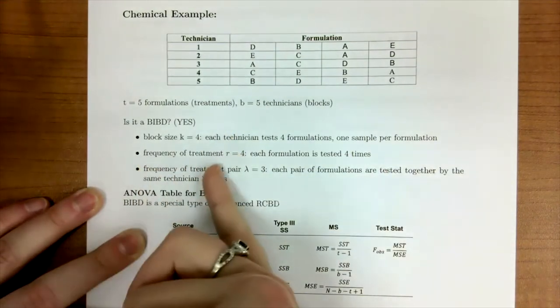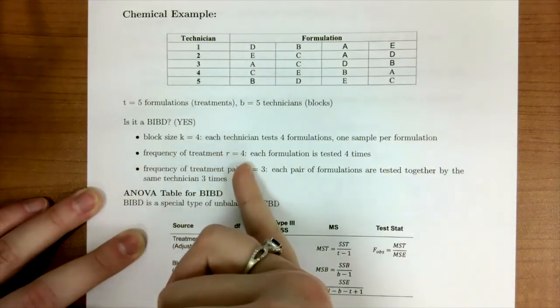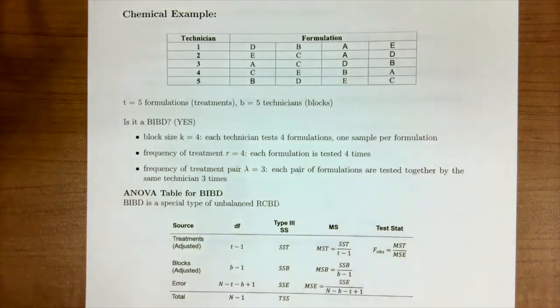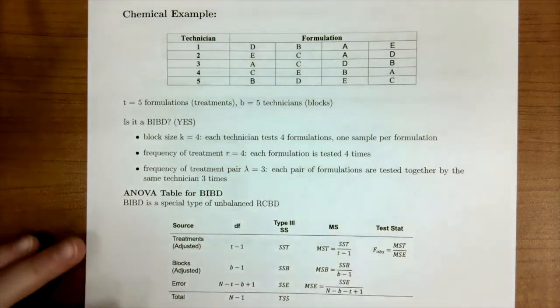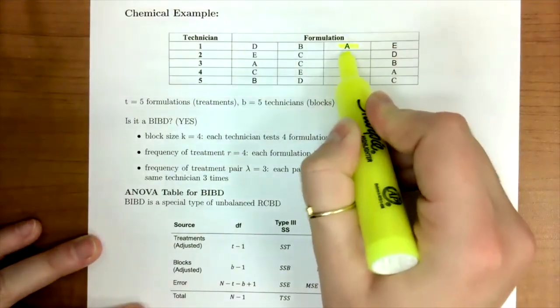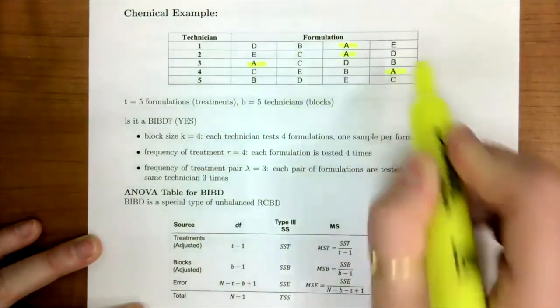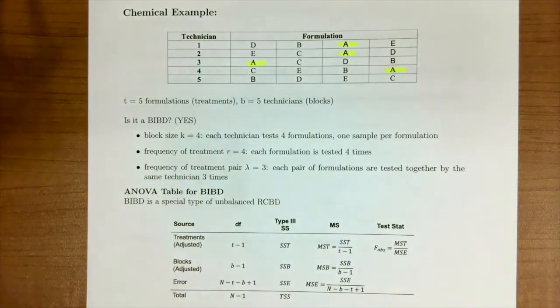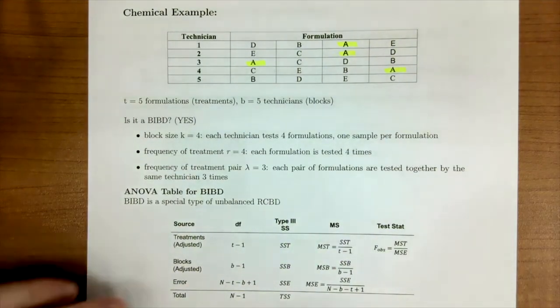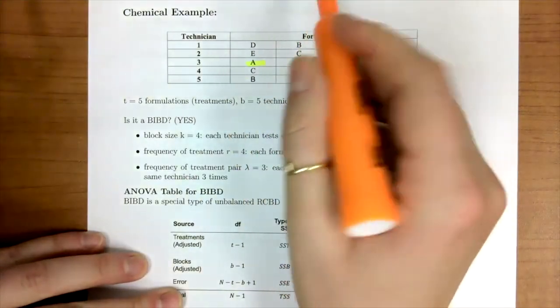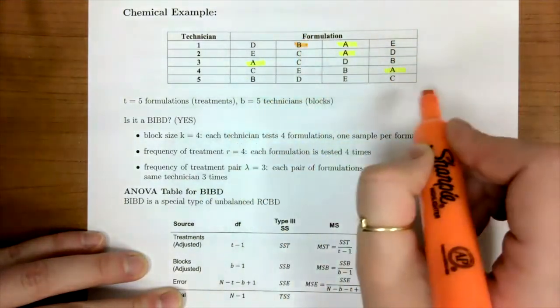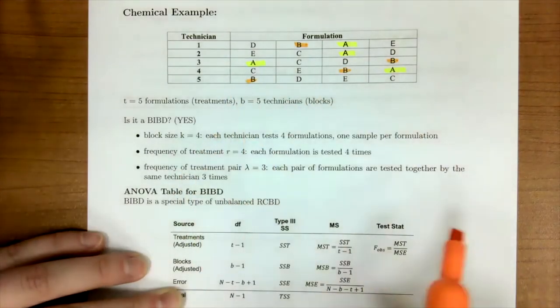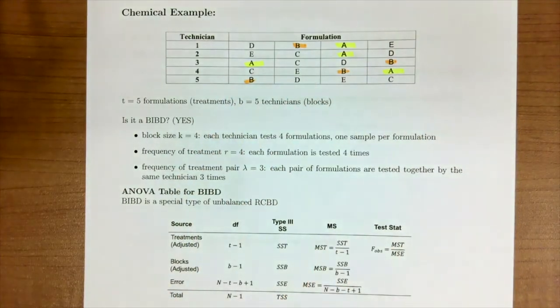Our frequency of treatment is r. That is, each formulation is tested four times. So let's just look at formulation a. We can see one, two, three, four, and it's not with the fifth technician. If we look at formulation b, one, two, three, four. So frequency is the number of times we see the treatment.